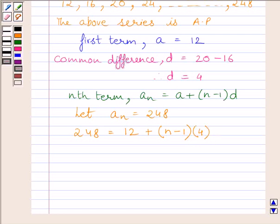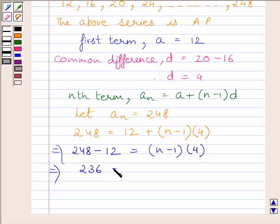Now subtracting 12 from both the sides we get 248 minus 12 is equal to (N minus 1) multiplied by 4. Now simplifying further we get 236 is equal to (N minus 1) multiplied by 4.